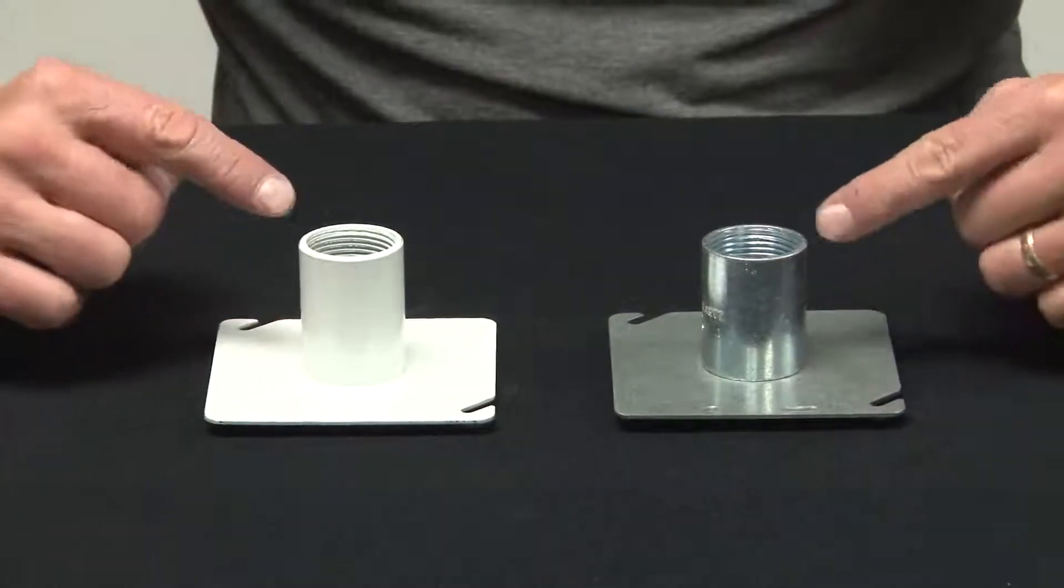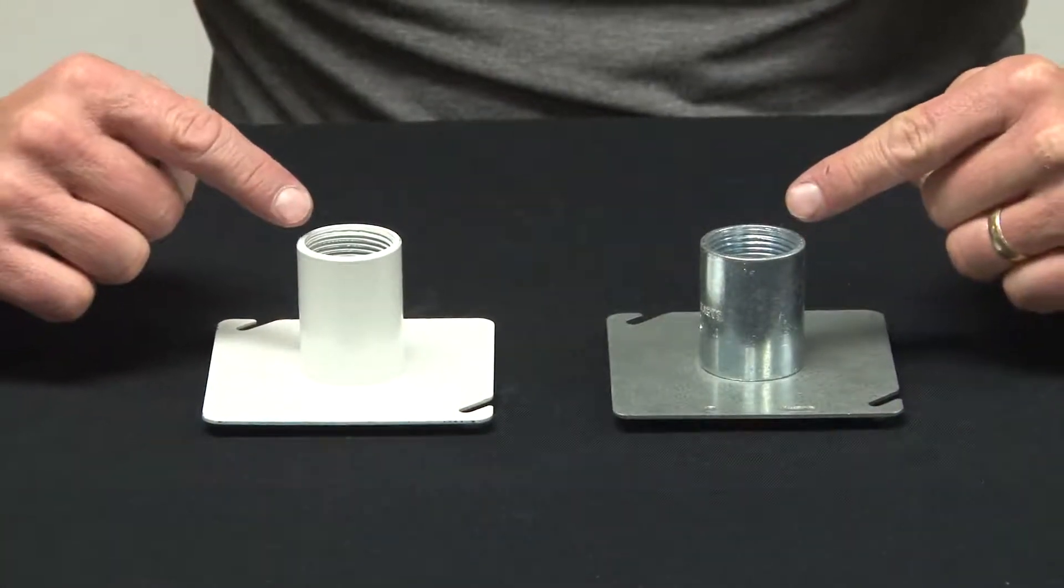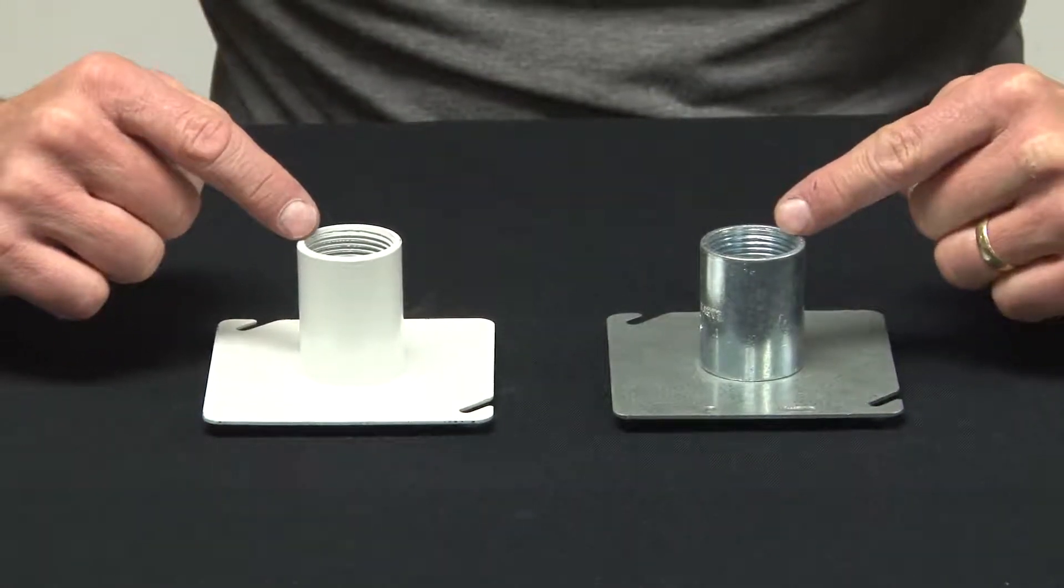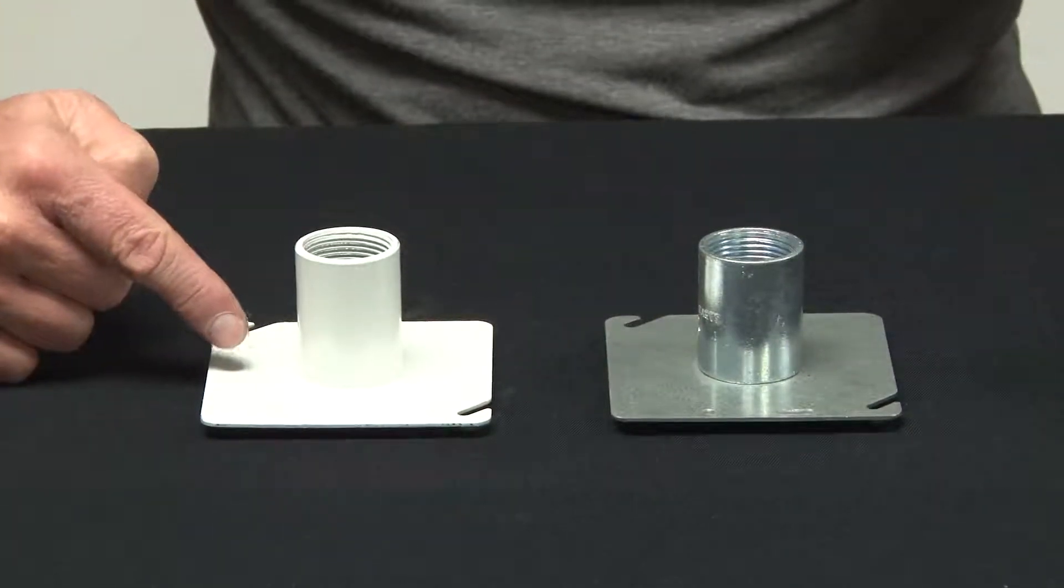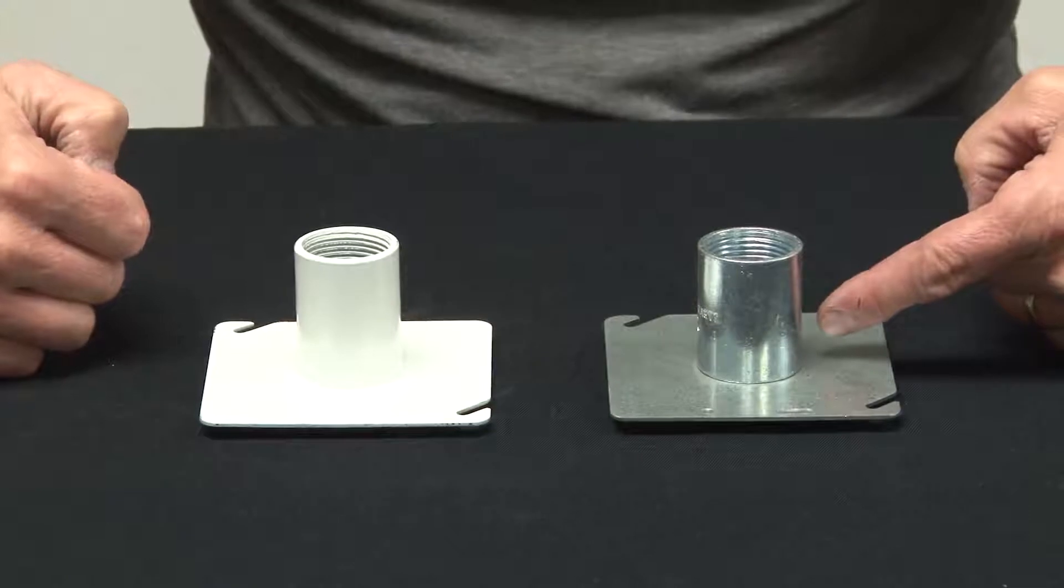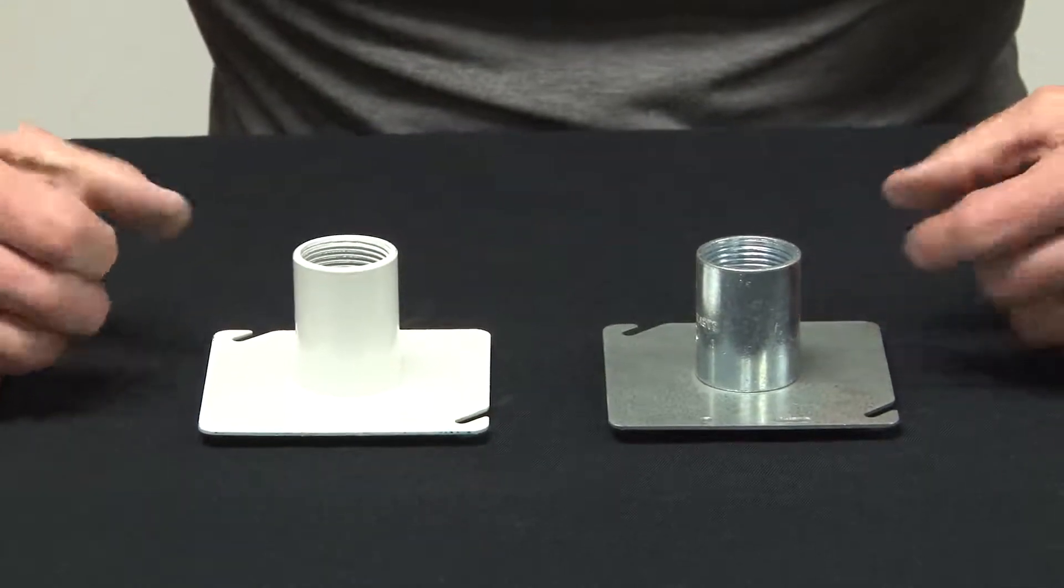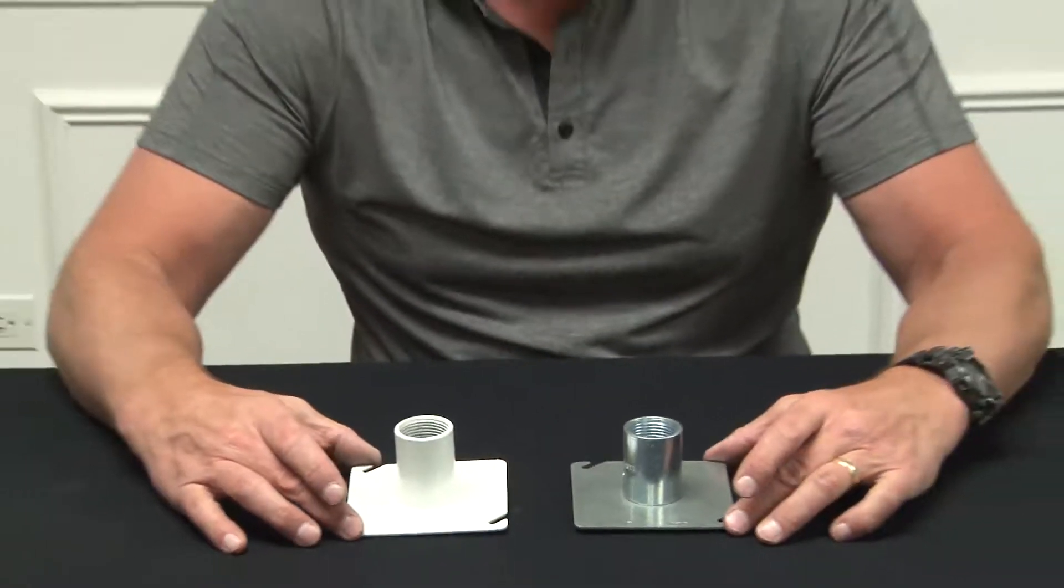These come in half inch, three quarter inch, one inch, inch and a quarter, and inch and a half models in painted ceiling white or silver zinc plated galvanized finish. For these and other great products, be sure to visit us online at garvinindustries.com.